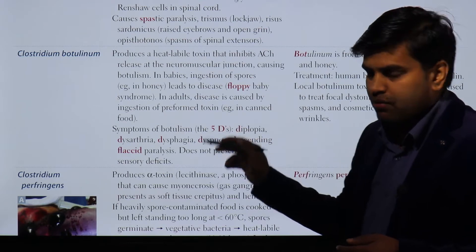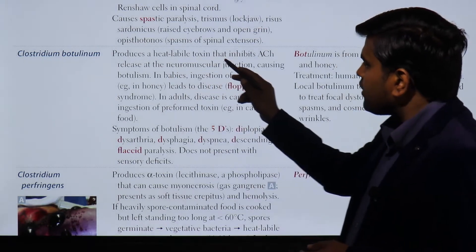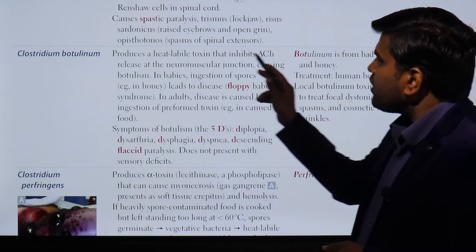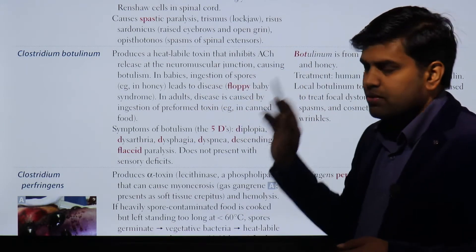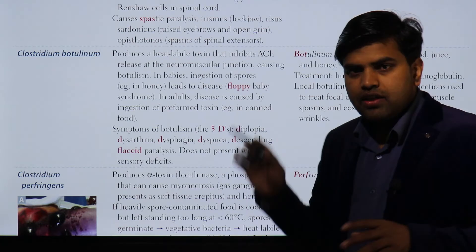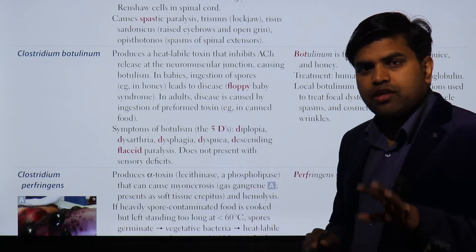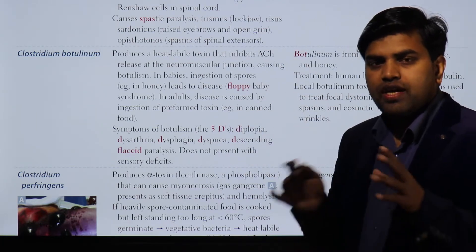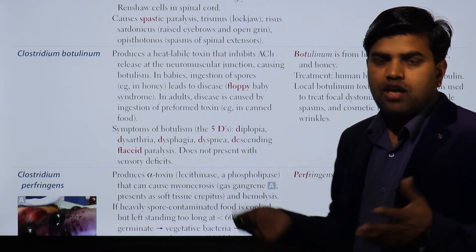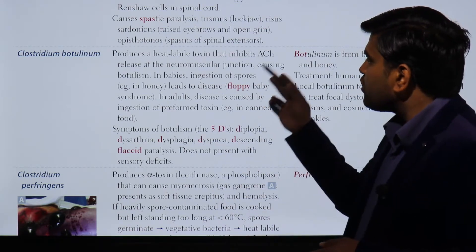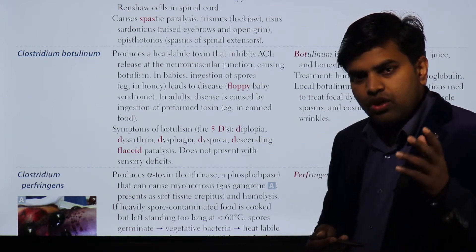Clostridium botulinum produces a heat-labile toxin that inhibits acetylcholine release at the neuromuscular junction, causing botulism. The main action is related to acetylcholine — the toxin interferes with acetylcholine release, so all the actions of acetylcholine in the body are now inhibited wherever the botulinum toxin is present.